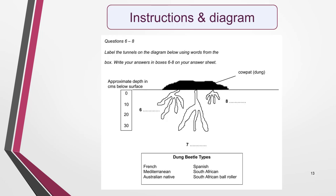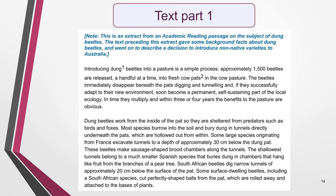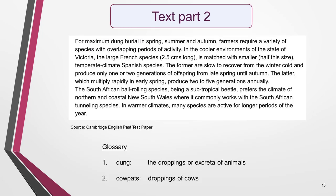Now for our practice question. This question is from a past IELTS reading test paper. You've already seen the instructions a couple of times, but here they are again. The next two slides contain the text — I've had to divide it due to lack of space. I've created PDFs of both the instructions and diagram and the text that you can download to make them easier to work on. You'll find the link to them in the notes below this video. Do note that only part of the text is shown — the passage in your test will be longer and have other questions set on it as well. Here's the text — don't read it yet. You need to do some work on the diagram first.